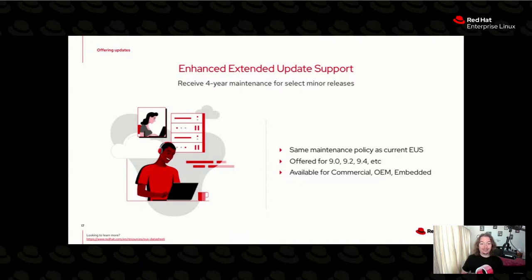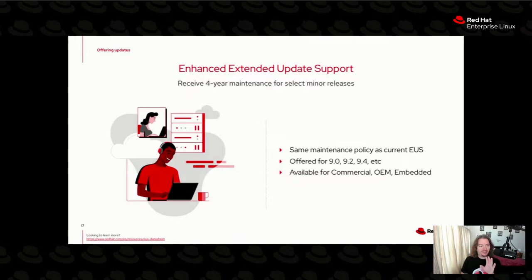That's why at Summit we announced Enhanced Extended Update Support — EEUS. If two years is good, four years must be better, right? This is where you can kind of choose your own speed: patch monthly, quarterly, at minor releases, two-year EUS, or four-year EEUS. This was announced at Summit — starting with RHEL 9.0, this will be available. I believe it'll be available in Q3, just a couple of months away as things get fleshed out. This is similar to E4S for SAP customers, but for general consumption.